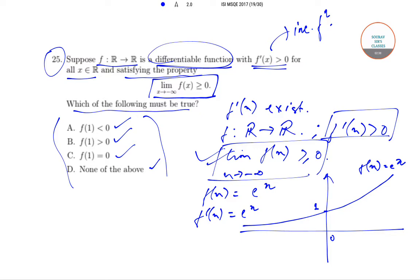So then if we find out f(1) will be equal to e to the power 1, that will be equal to e which is always greater than 0. So we can definitely say that option B, that f(1) is greater than 0, is the correct option. So option B is the correct option over here.